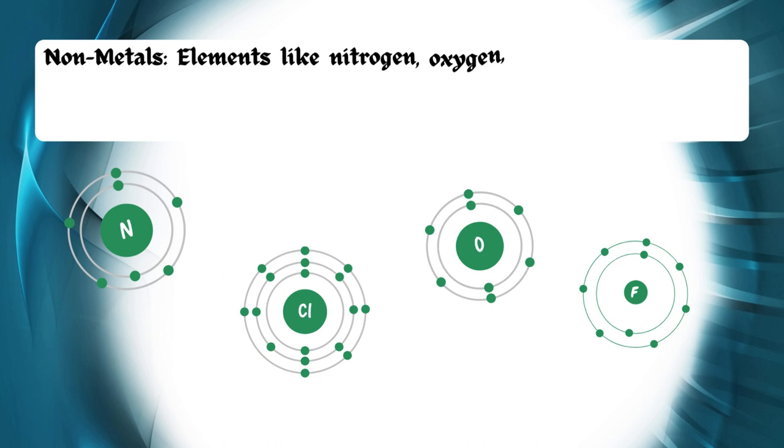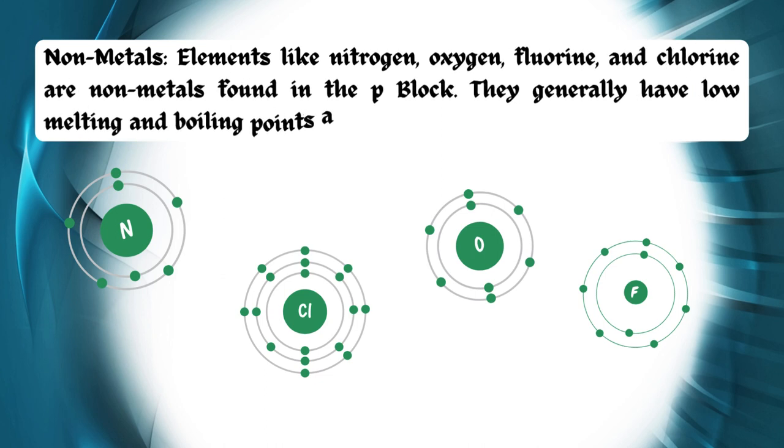Non-metals: elements like nitrogen, oxygen, fluorine, and chlorine are non-metals found in the p-block. They generally have low melting and boiling points and are poor conductors of electricity.